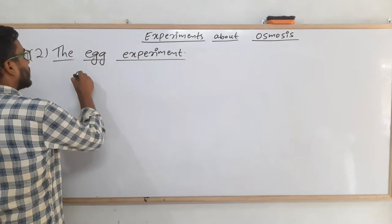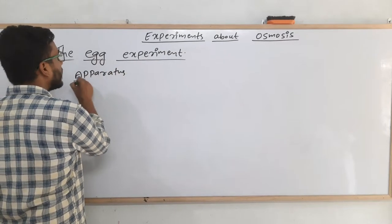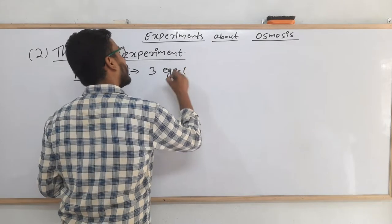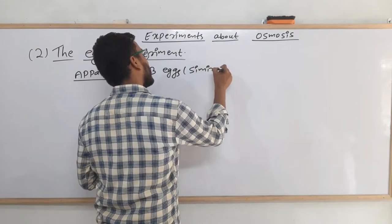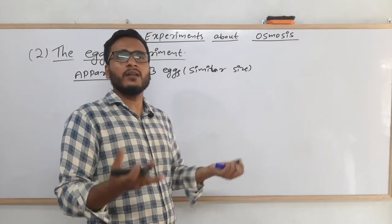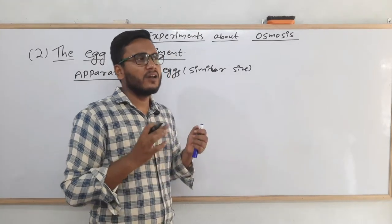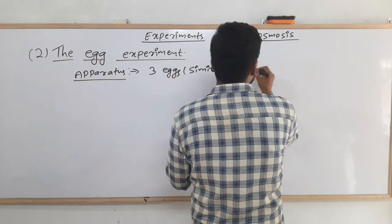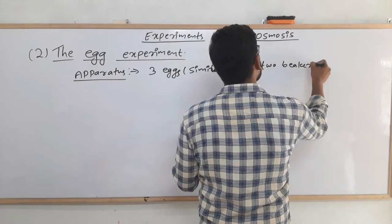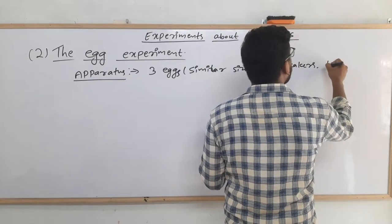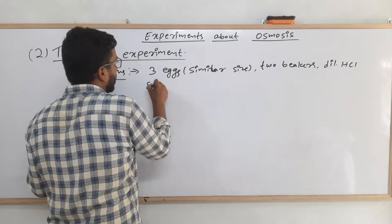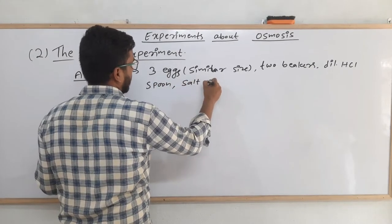Let me write the apparatus required. First, you will need three eggs of similar size — don't take one big and one small, take three nearly equal-sized eggs. Then we need three big beakers. We also need dilute hydrochloric acid solution, a spoon, and salt solution.